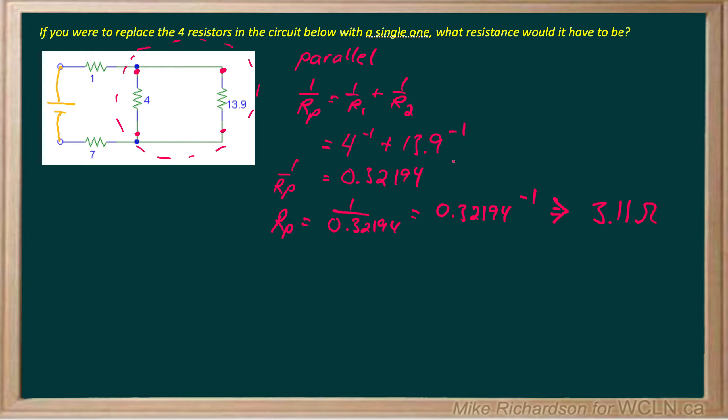It's interesting to note that in parallel, your answer is always going to be smaller than your smallest resistor that's in parallel. So it's going to be smaller than the 4 ohms. It is. We're good to go.